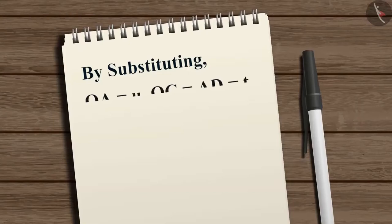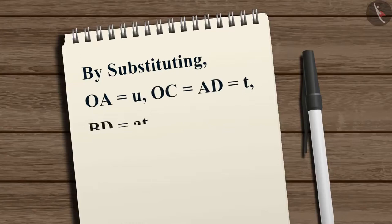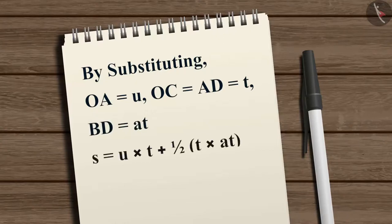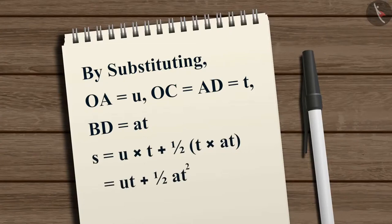By substituting OA = u, OC = AD = t, and BD = at, we get s = u × t + ½ × t × at, which equals s = ut + ½at². This is the second equation of motion.